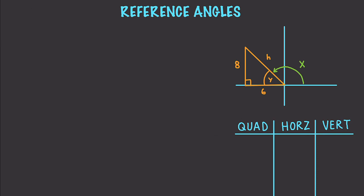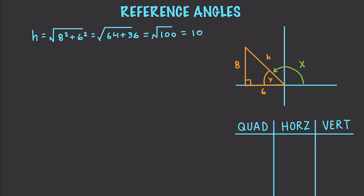In this example in the upper right-hand corner — just ignore the bottom part until a little bit later — if we know these two sides are 8 and 6, then we can find the hypotenuse by getting the square root of 8 squared plus 6 squared, which equals the square root of 64 plus 36, which is the square root of 100. So our hypotenuse is 10.